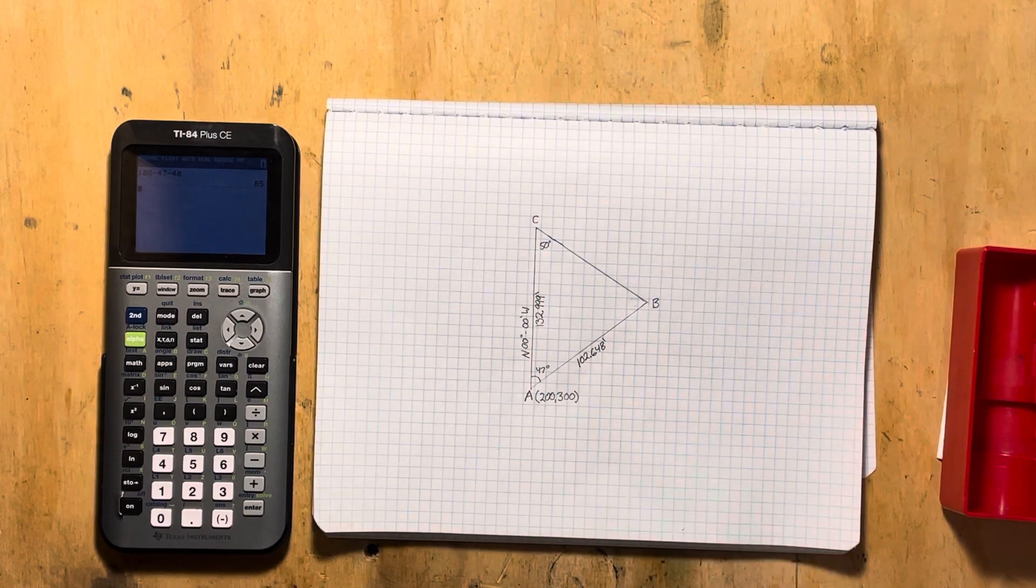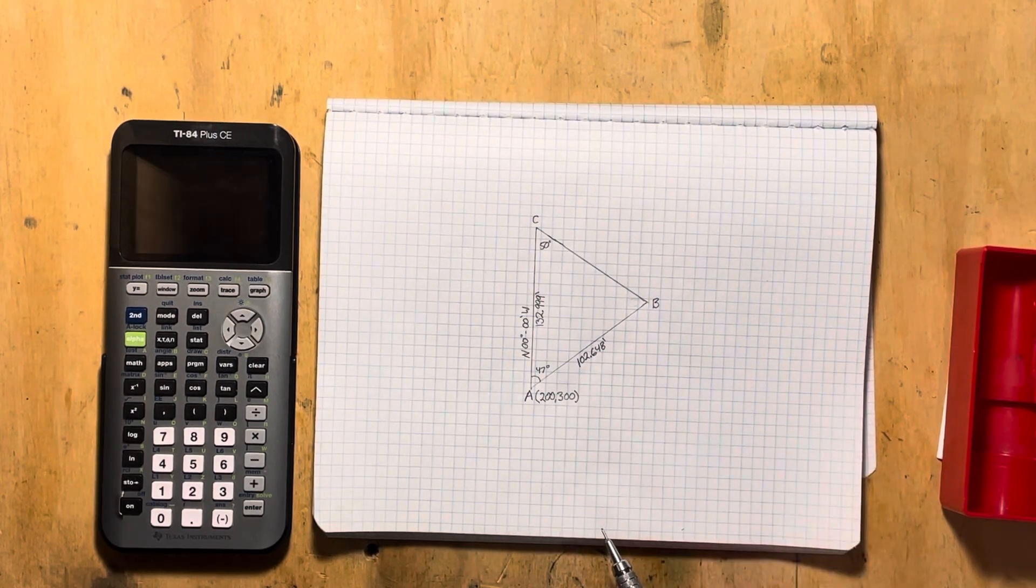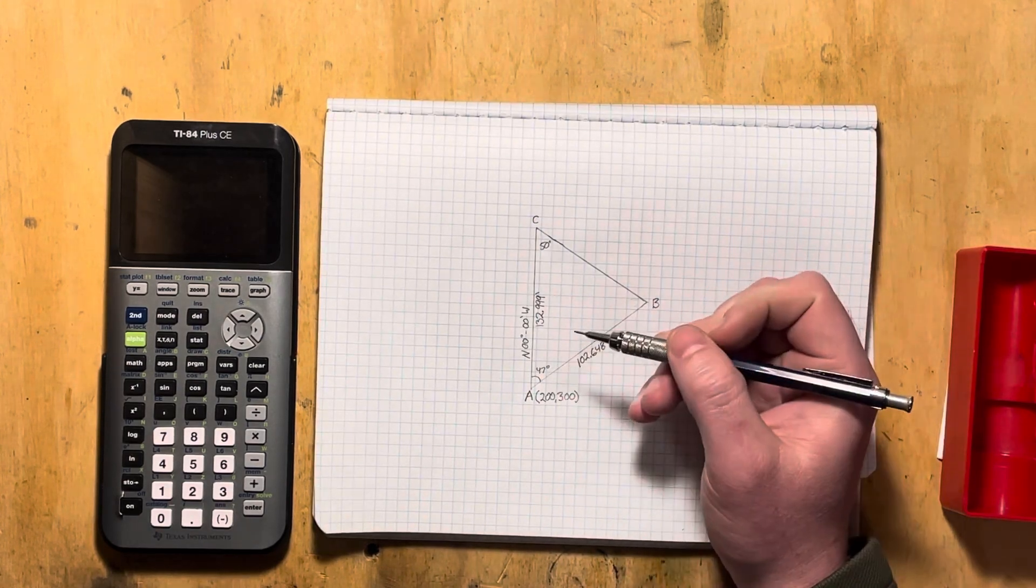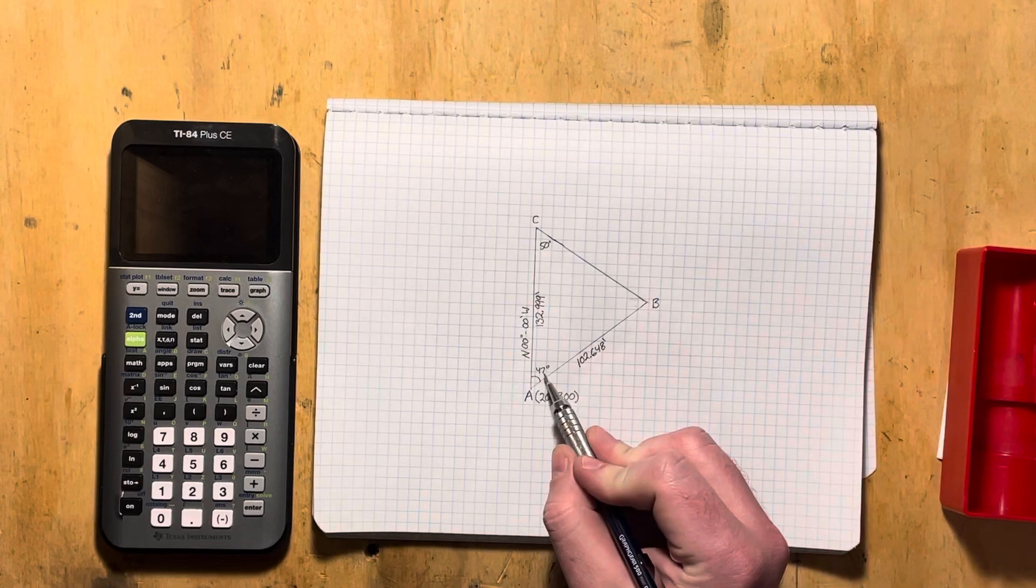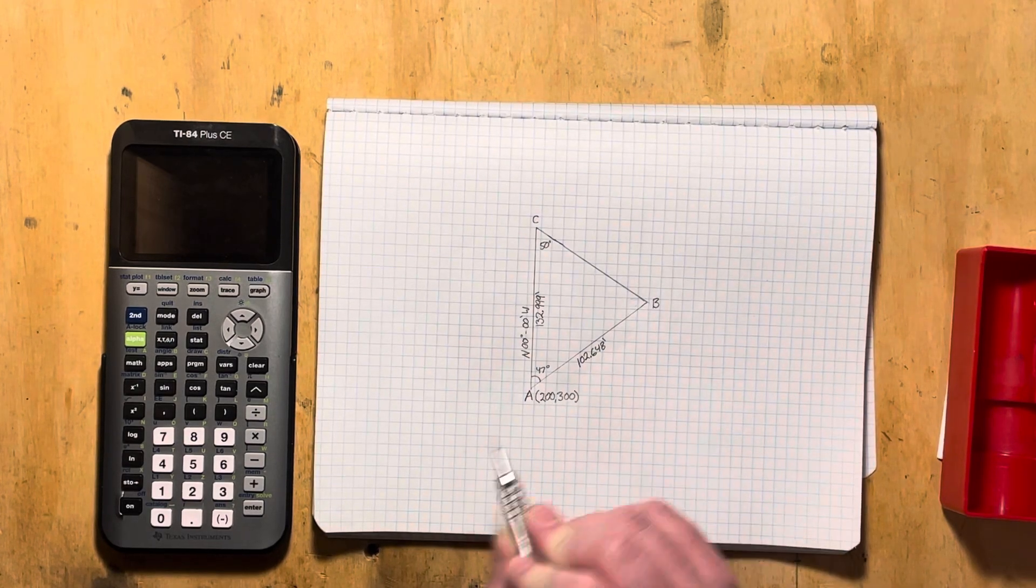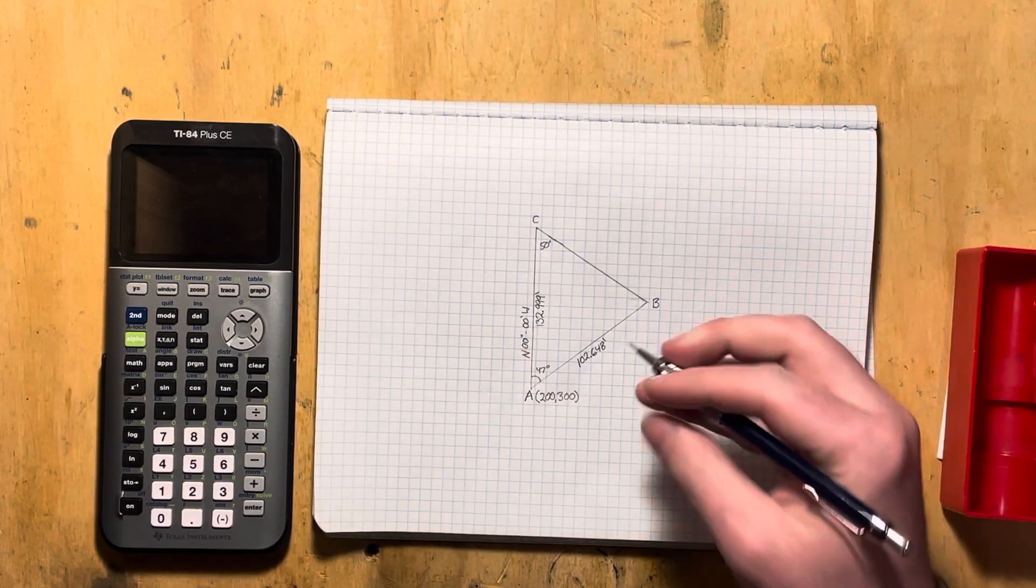So first of all, let's look and see what we can do about this line AB. It's fairly easy in this instance because we have this north-south line here. We know that this line is 47 degrees offset from that towards the east. It's very simple.